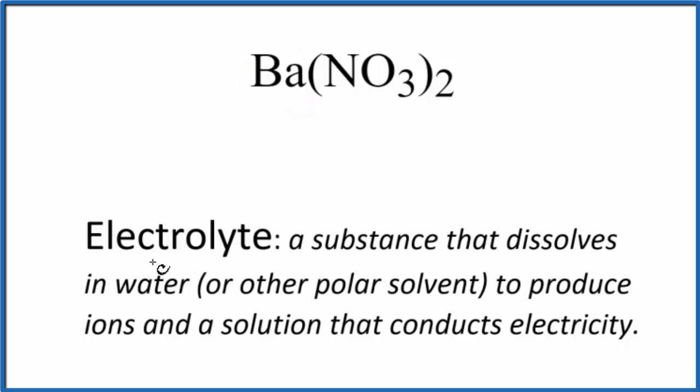When we look at our definition for an electrolyte, we see that it's a substance that dissolves in water or another polar solvent, and it produces ions. And because we have these ions, the solution conducts electricity.